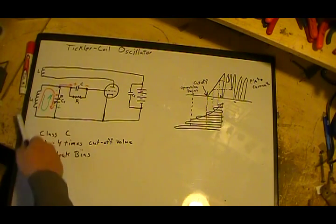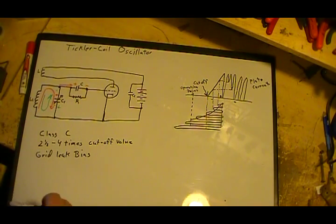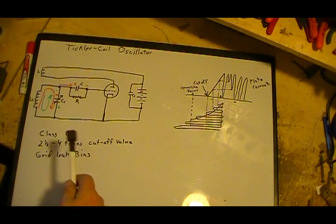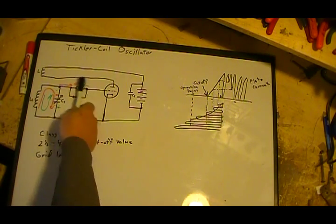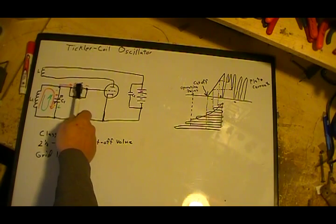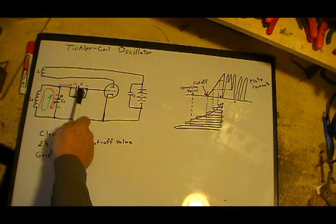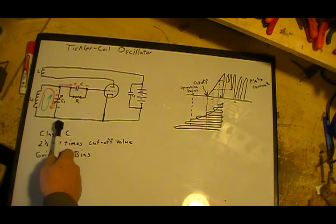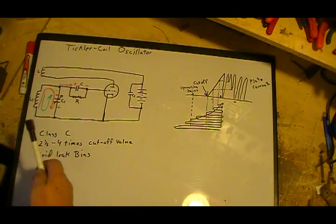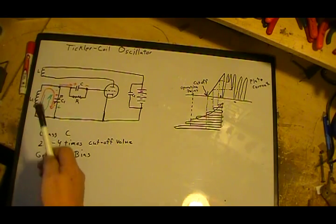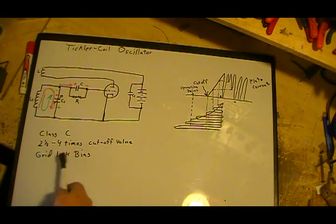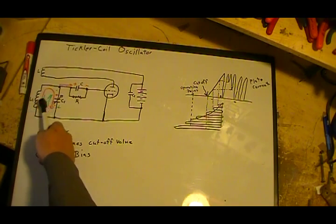And that keeps the oscillator going. And that's basically how it operates. They're not real complicated. Some of the biggest thing is trying to get the size, the RC size for your time constant set up. Make sure the coils are wound properly so that they're additive, they don't fight each other.